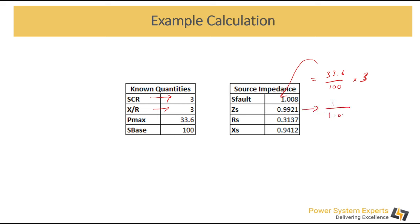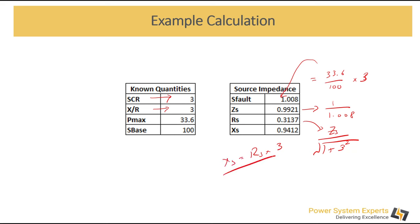Once we have the fault MVA value, we divide it by 1 to get Z_source. Then we divide Z_source by the square root of (1 + X/R²), where X/R is 3, and when we solve this we get R_s = 0.331.